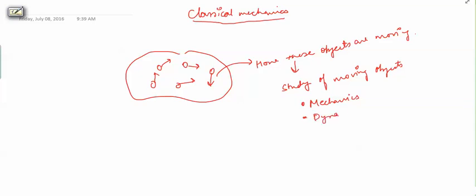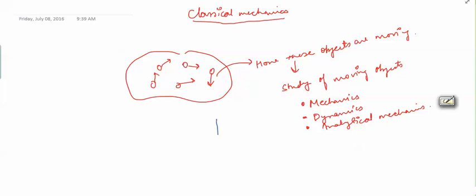There are many names for the same subject: we call it mechanics, we call it dynamics, we call it analytical mechanics, and so on. These are all names for one subject — the study of the motion of objects. This is an old subject and it has evolved over time.